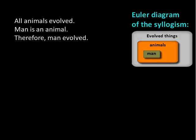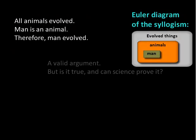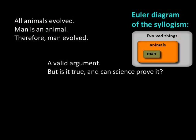Now look at this syllogism. The major premise is: all animals evolved. The minor premise: man is an animal. Conclusion: therefore man evolved. Now that would be considered a valid argument — but is it true, and can science prove it? I would say no.